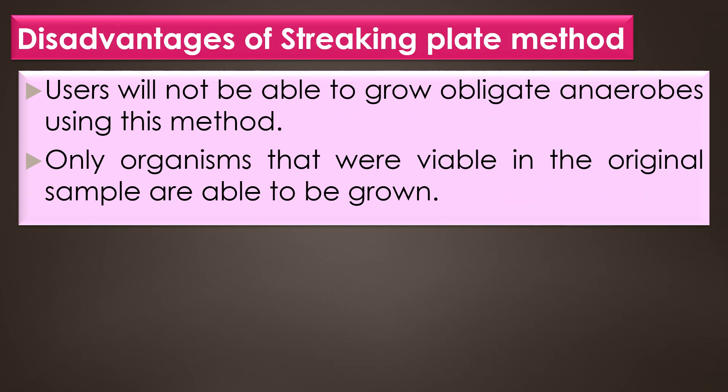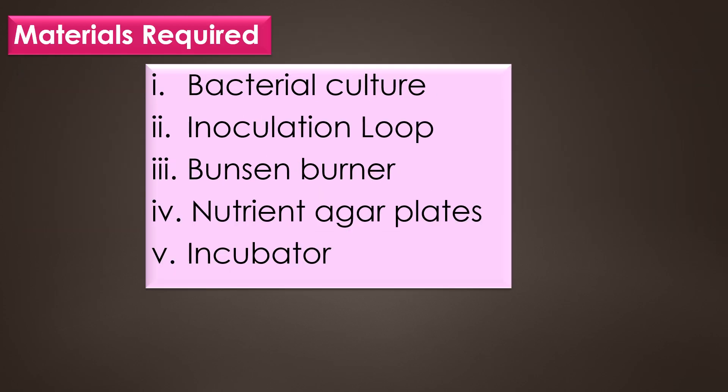The streak plate method has two major disadvantages. Firstly, users will not be able to grow obligate anaerobes using this method, and secondly, only organisms that were visible in the original sample are able to be grown. The materials required for the streak plate technique are bacterial culture, inoculation loop, Bunsen burner, nutrient agar plates, and incubator.